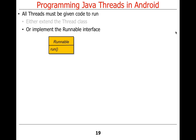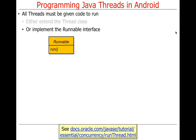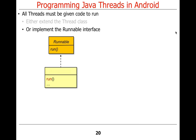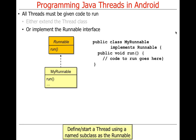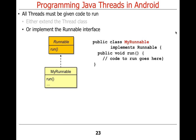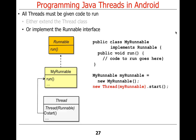Another way is to implement the Runnable interface. The Runnable interface has a method called run. One approach is to have a named subclass as the Runnable: 'MyRunnable' implements Runnable and has a run method. Then you create a new Runnable, make a new Thread passing MyRunnable as a parameter, start that thread, and the run method gets called on the Runnable.